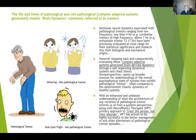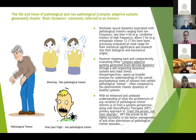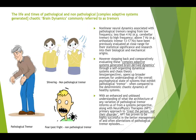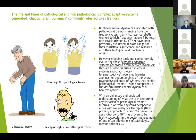Pathological tremors are studied quite extensively and for all the right reasons — they're quite detrimental to the health of a person and, of course, the families that suffer a lot from people who have these pathologies. They've been studied for their statistical significance and research into their biological and mechanical origins, to develop medications and rightly so. However, stepping back and comparatively evaluating these dynamics through self-organising dynamical systems and chaos theory opens up broader avenues for understanding the overall psychophysical state of systems exhibiting pathological tremor. With an enhanced understanding of what the architecture of any variation of pathological tremor informs us from a systems perspective, along with neurophysics therapy's primary approach to treat the person and not the disorder, neurophysics therapy has proven to be highly successful in the better management and often alleviation of pathological tremor episodes.